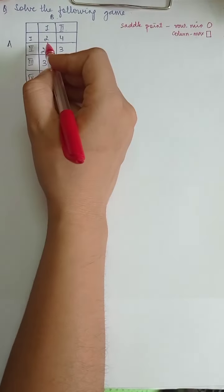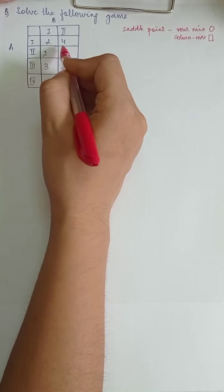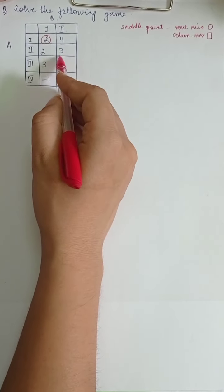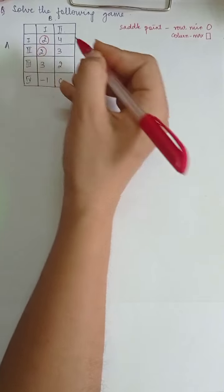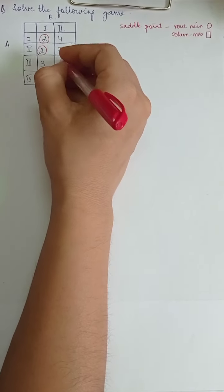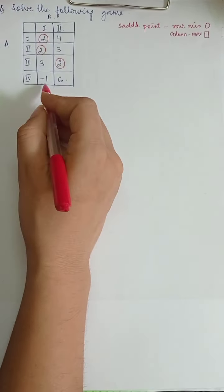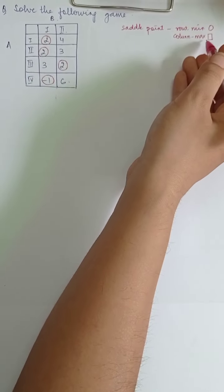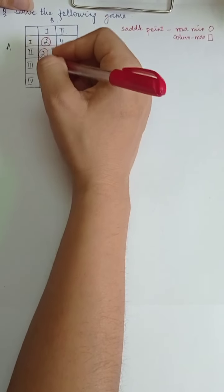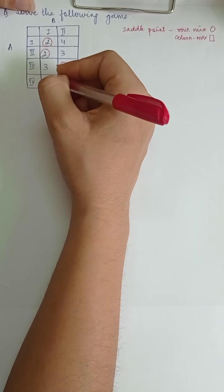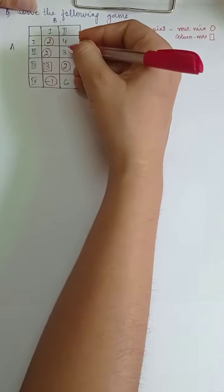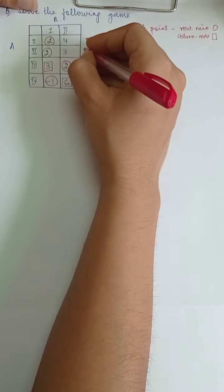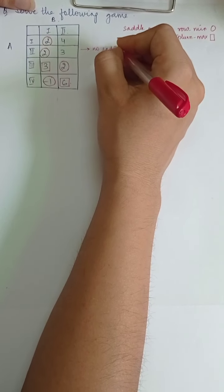In the first row, 2 and 4 — 2 is the minimum element, so we circle out 2. Then 2 and 3, 2 is the minimum element. Again, 2 is the minimum element. Minus 1 and 6, minus 1 is the minimum element. Now we square out the column maxima: in this column 2, 2, 3 and minus 1 — 3 is the maximum element; 4, 3, 2 and 6 — 6 is the maximum element. We derive that this game has no saddle point.